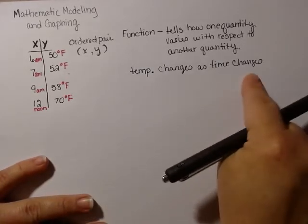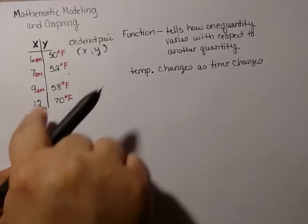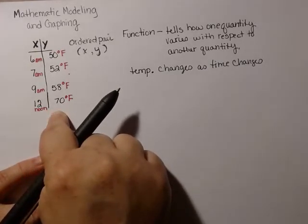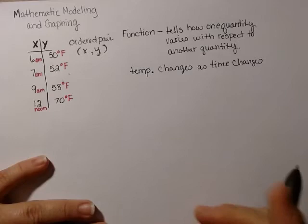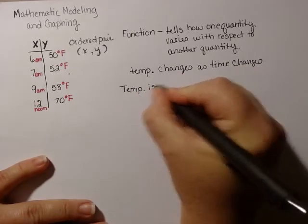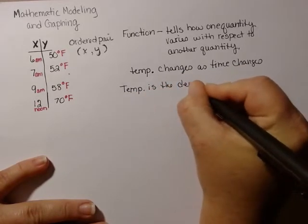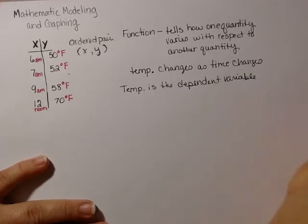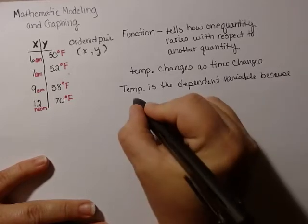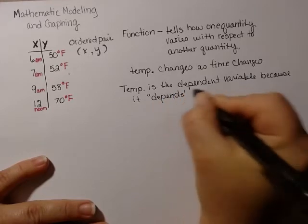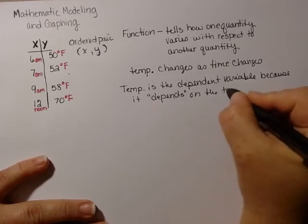If you're looking at this statement, or even if you're looking at the x's and the y's, y changes based on what x is. So what we can say is that the temperature is the dependent variable because it depends on the time of day.